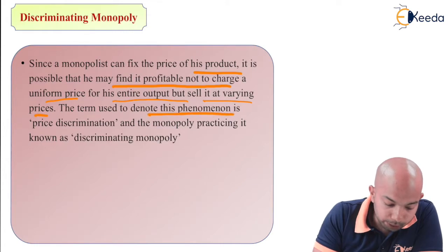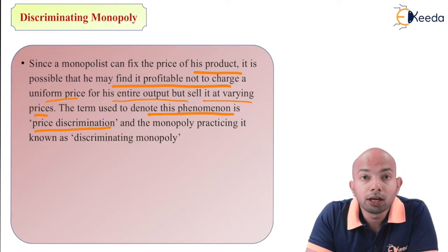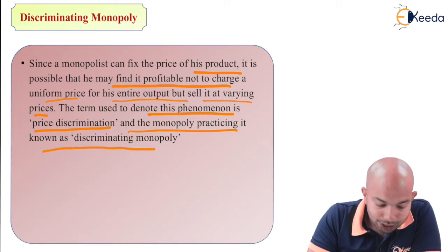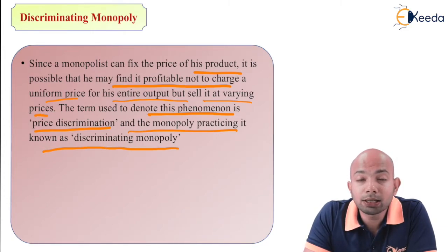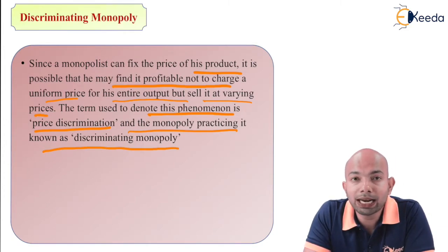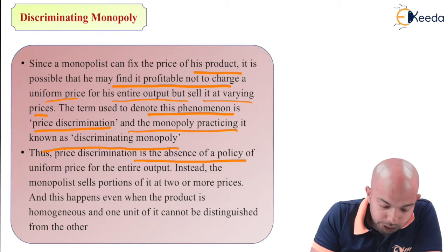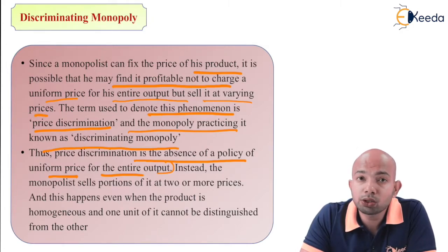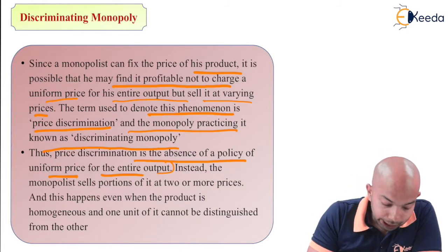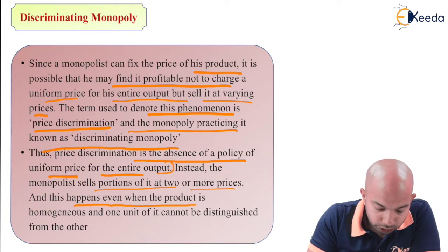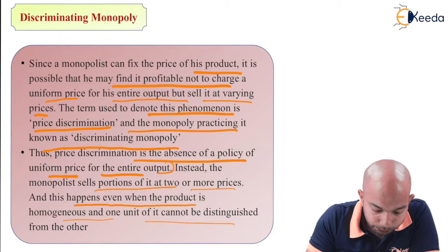The term used to denote this phenomenon is price discrimination. The monopoly practicing it is known as discriminating monopoly. Discriminating monopoly refers to conditions where prices vary as per different locations. Thus, price discrimination is the absence of a policy of a uniform price for the entire output. The monopolist sells portions of it at two or more prices, and this happens even when the product is homogeneous and one unit cannot be distinguished from the other.